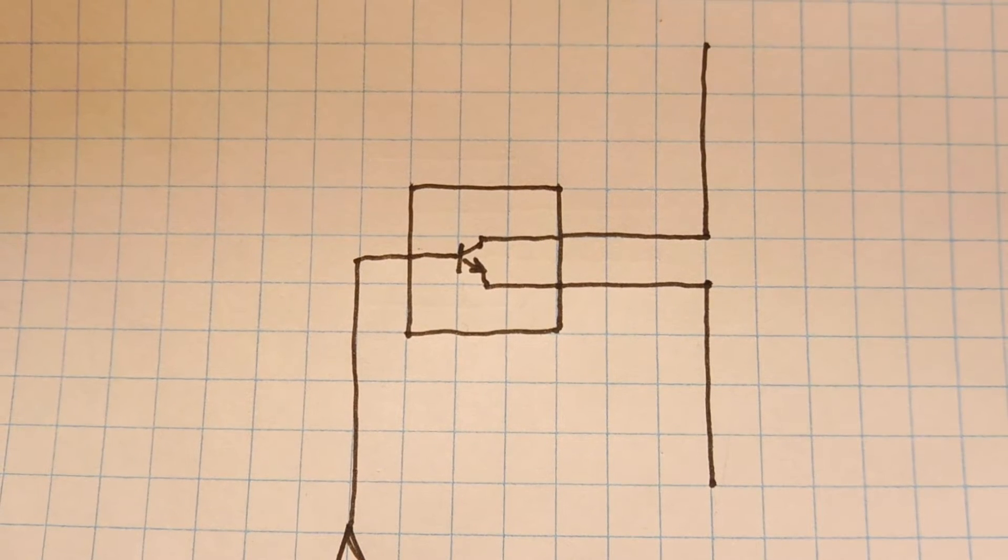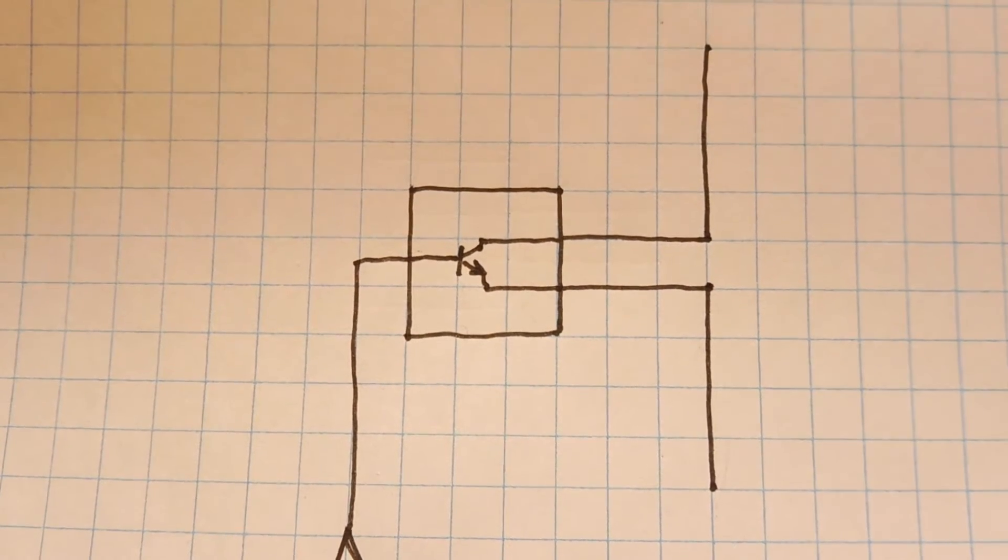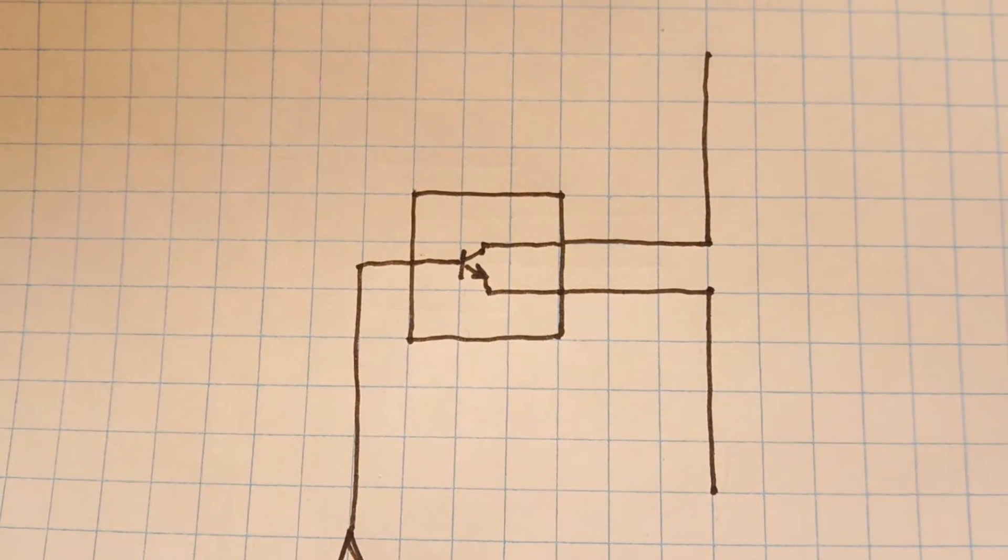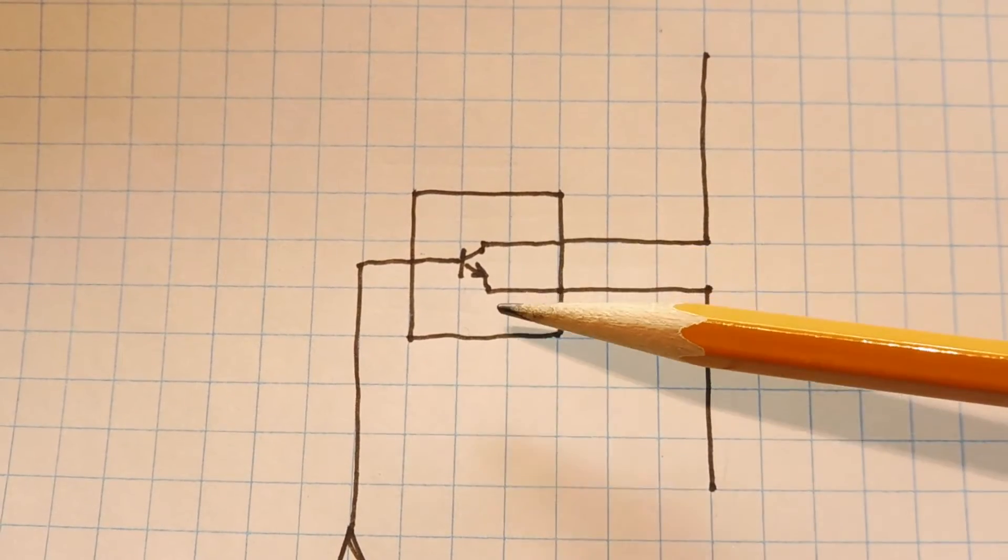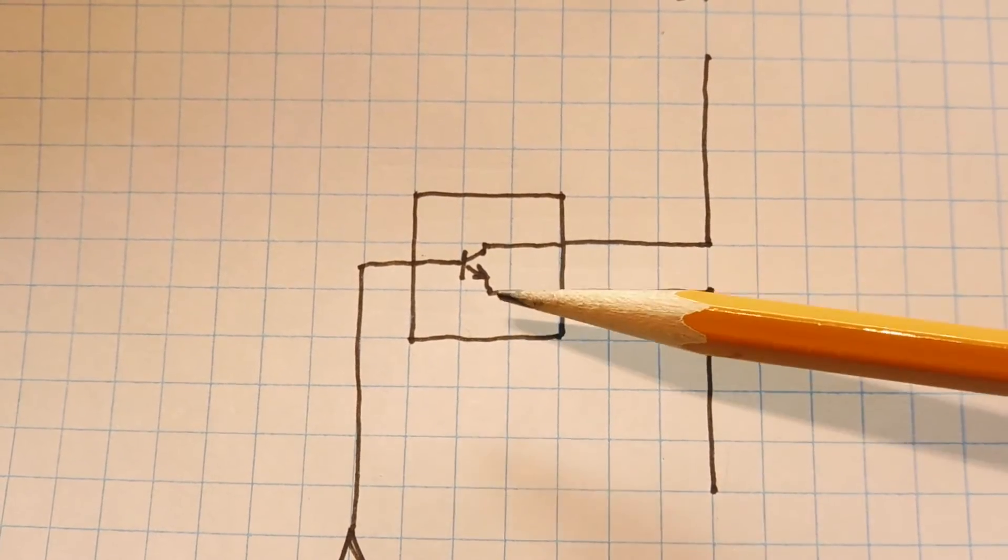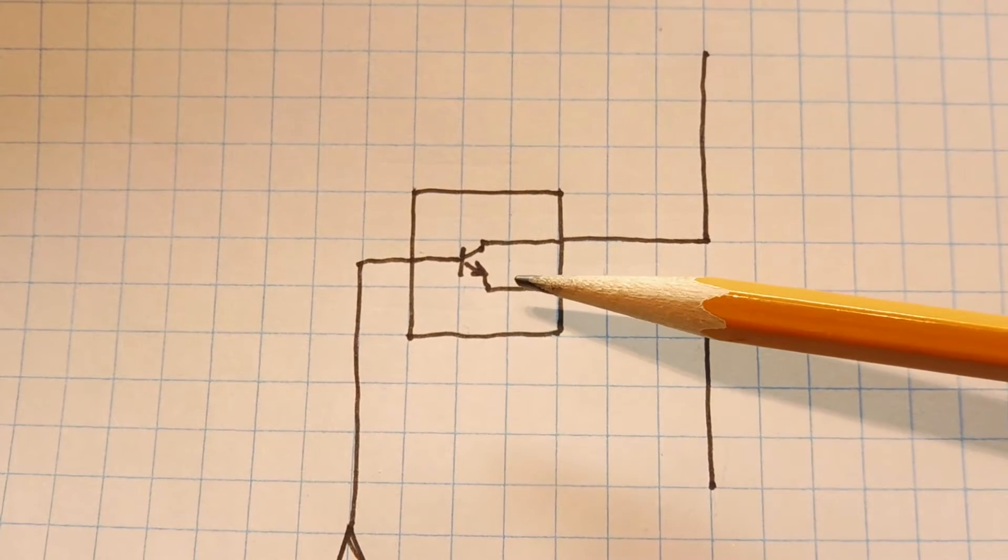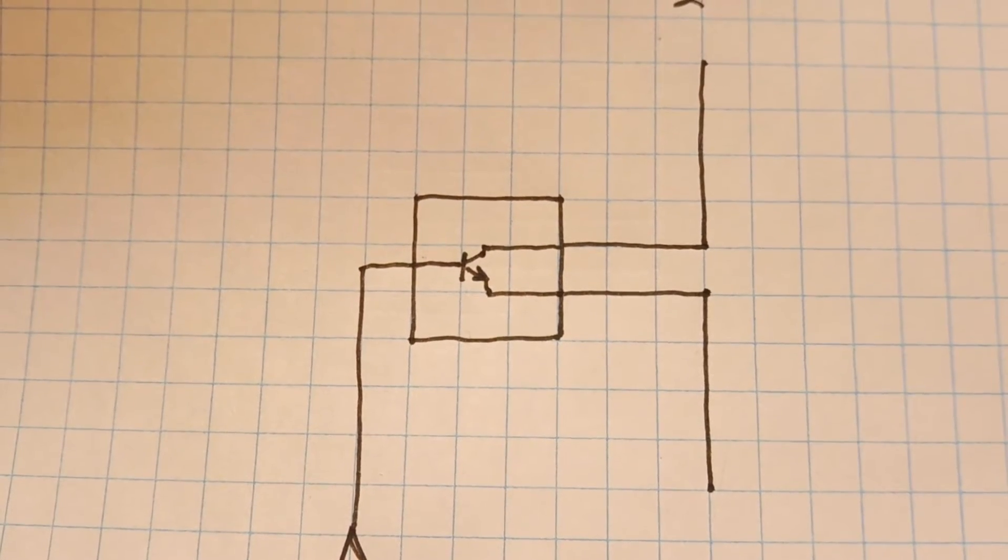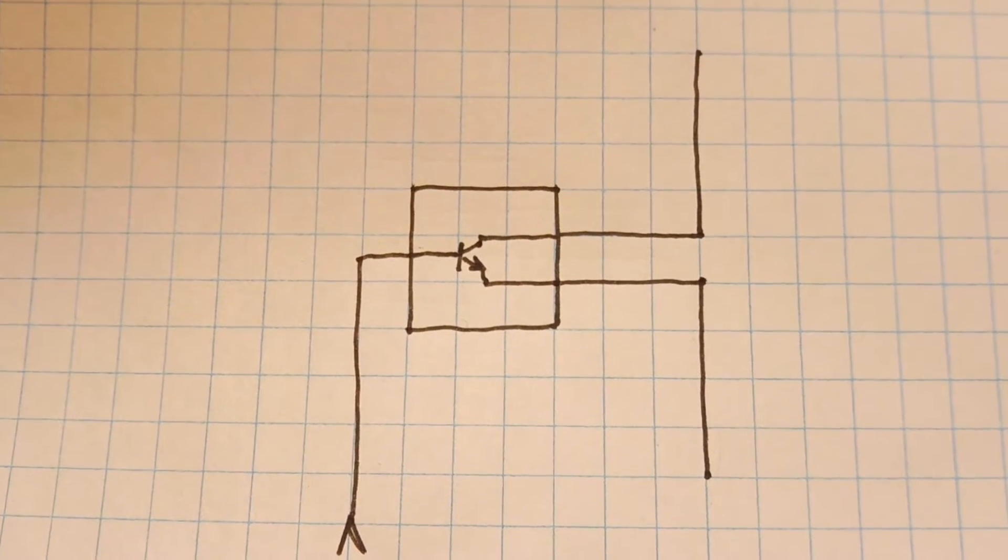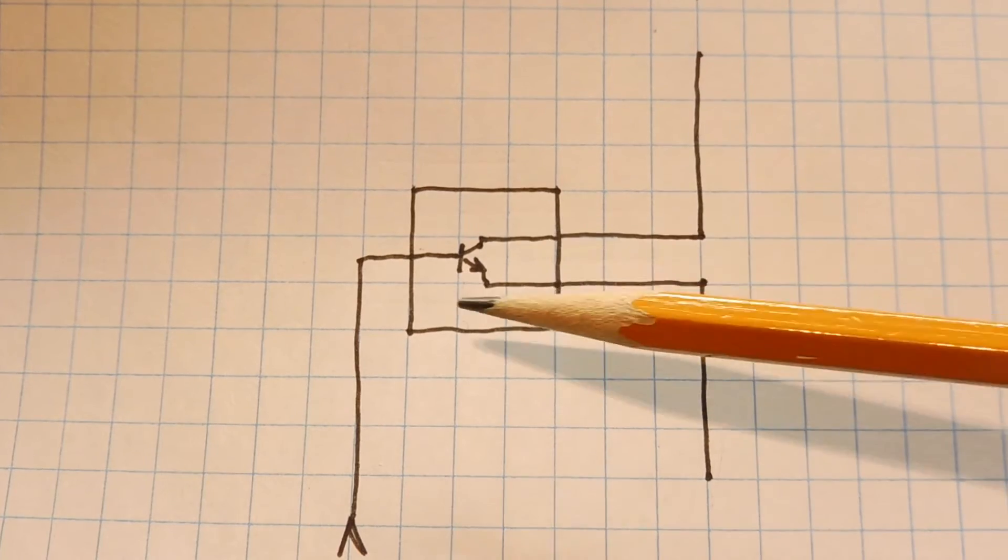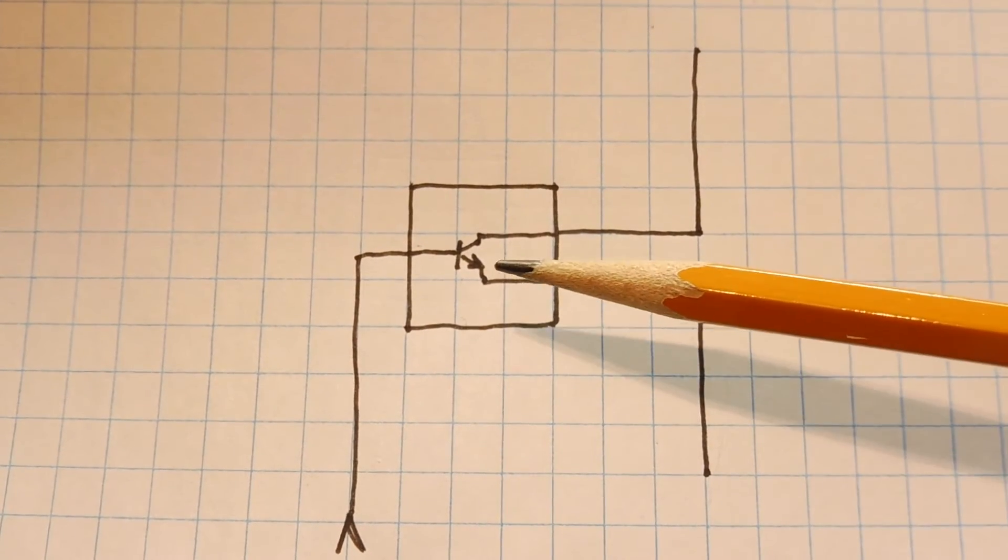The RFID tag also has a half-wave dipole antenna, but instead of a 50 ohm termination across the feed point, it has a transistor across the feed point. Now when this transistor is off, the feed point will be open circuit. Now when the reader sends RF energy at the correct frequency towards this tag, towards the antenna, there will be little or no current flowing through the antenna because of the open circuit condition.